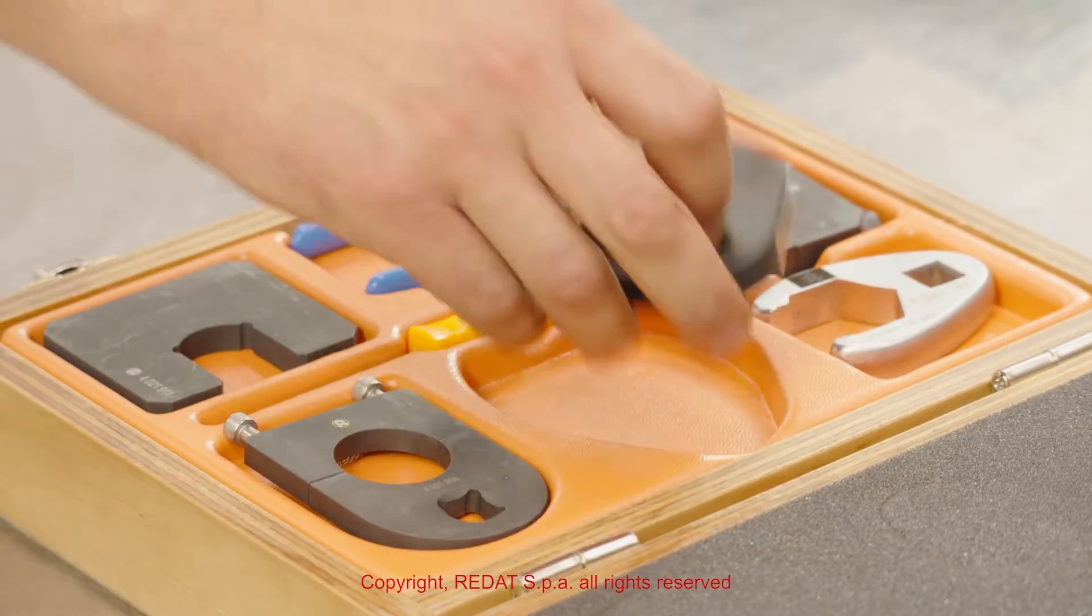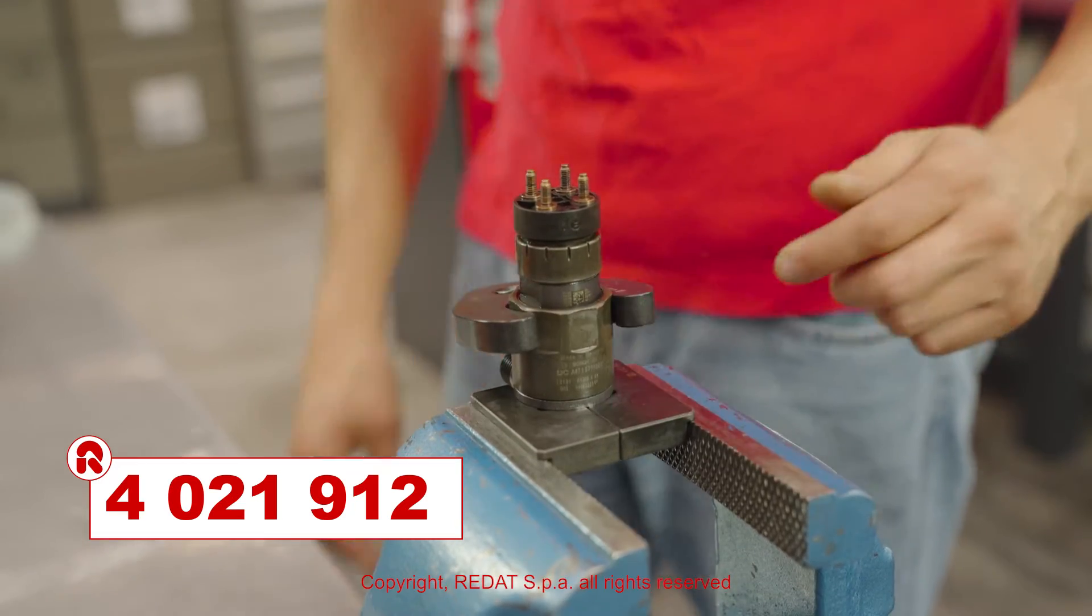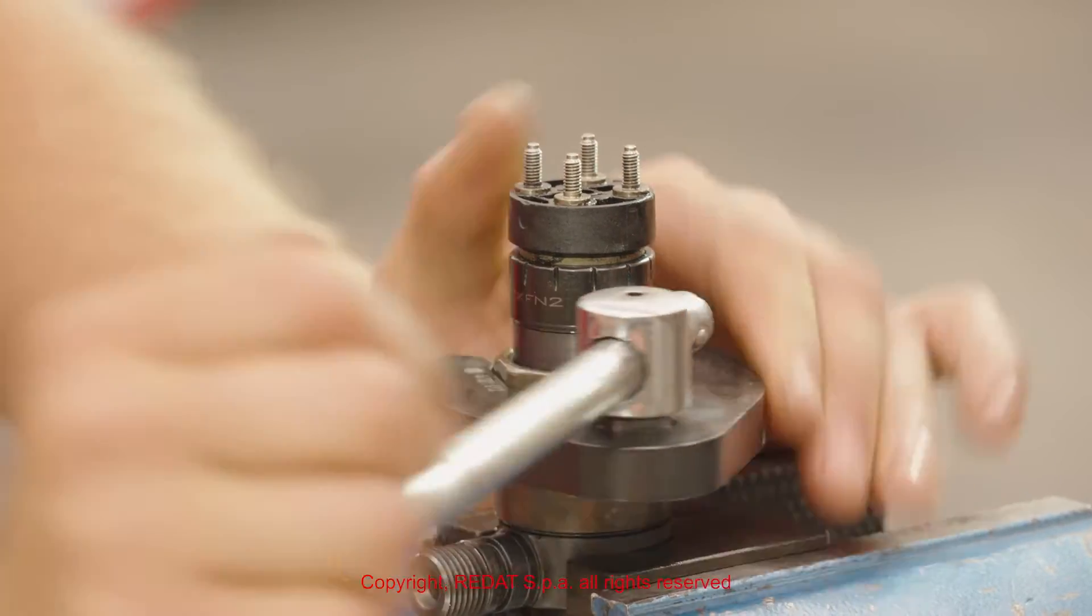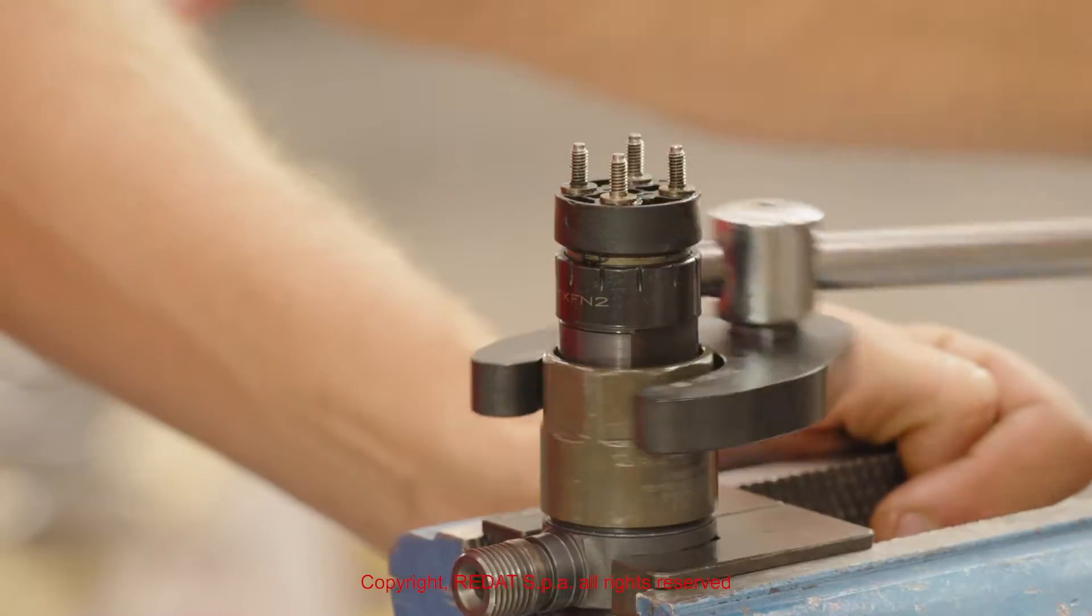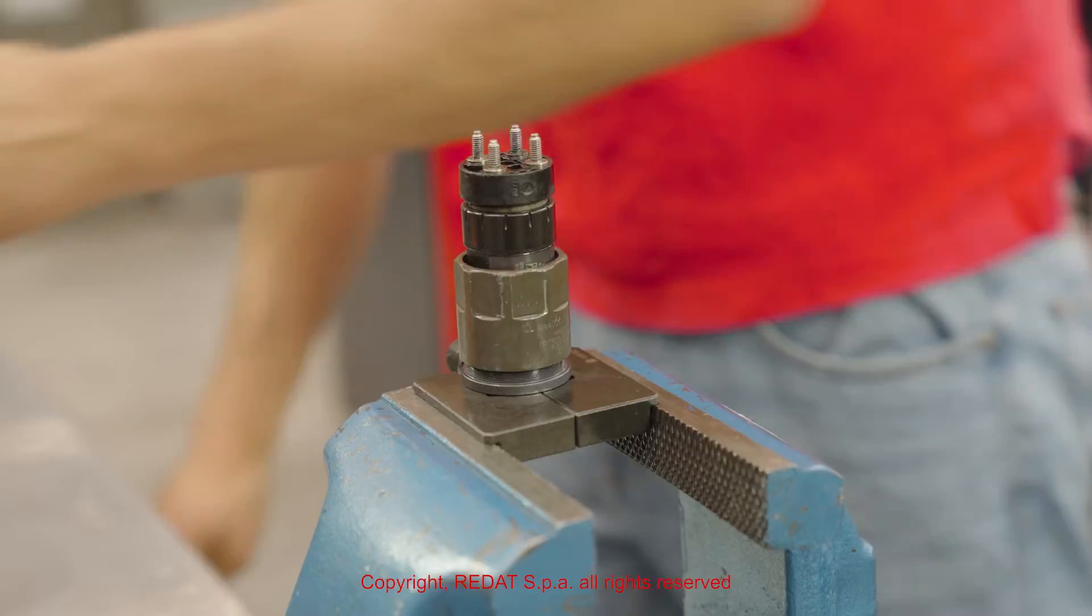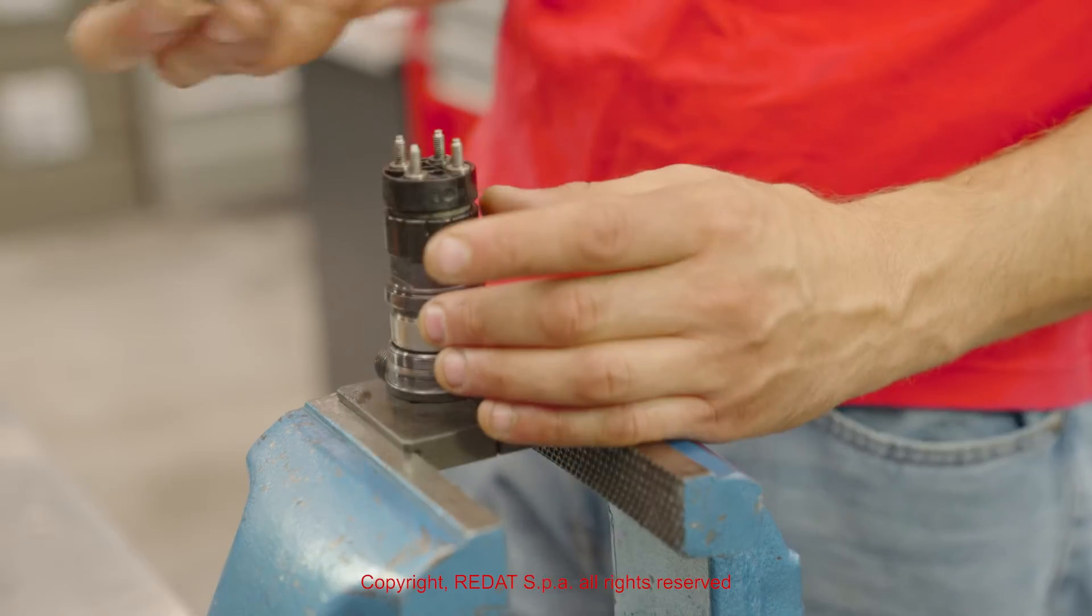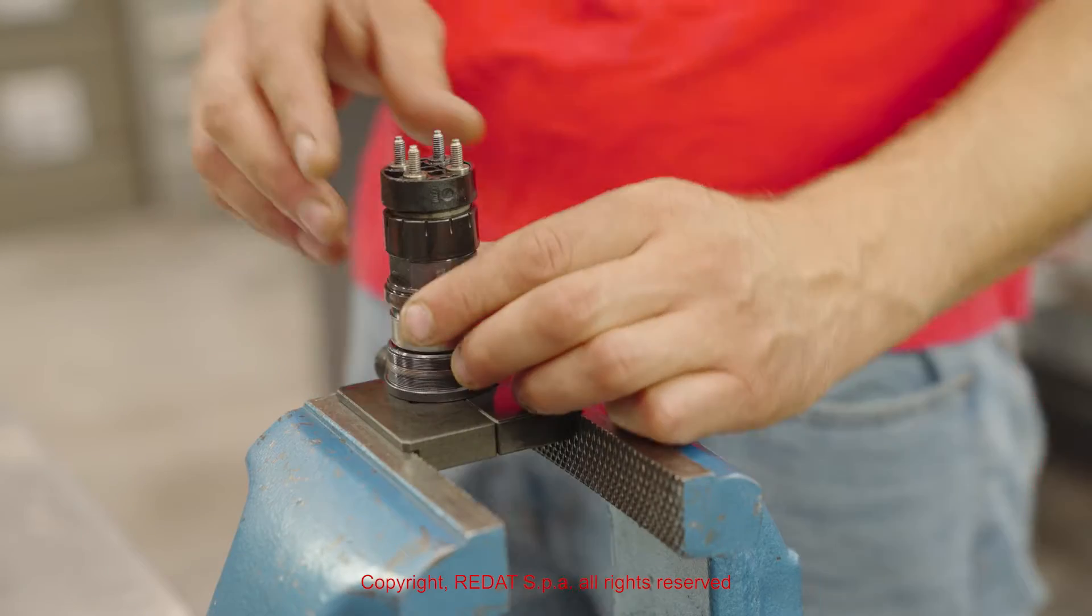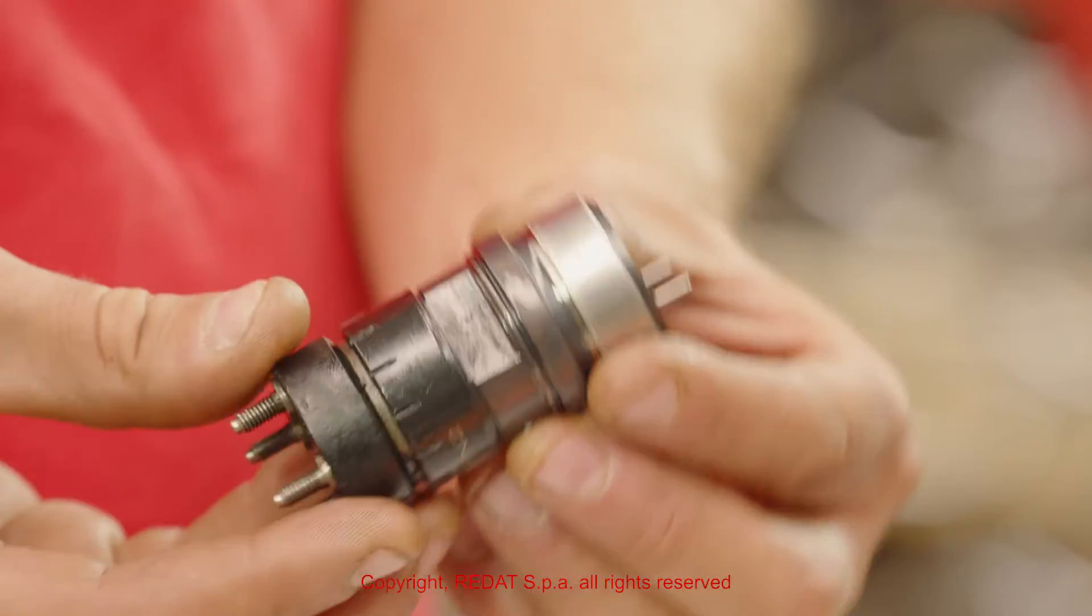Using the wrench 4 0 2 1 9 1 2, we remove the solenoid nut. This allows the removal of the solenoid group from the injector body.